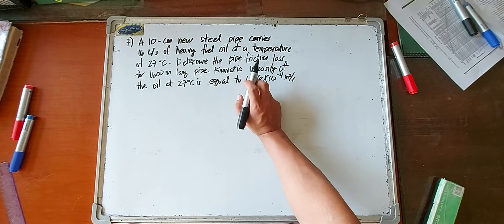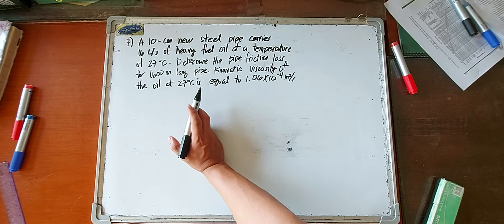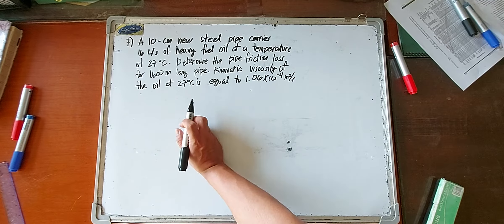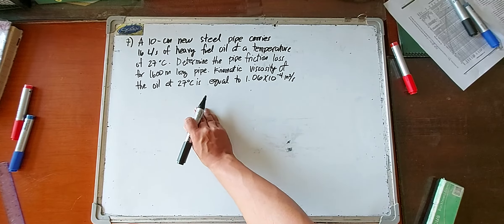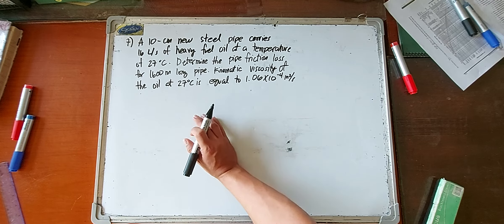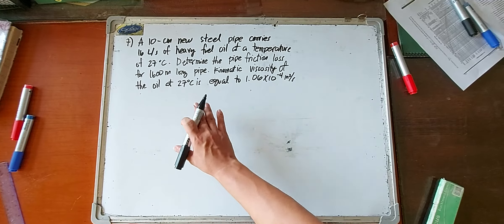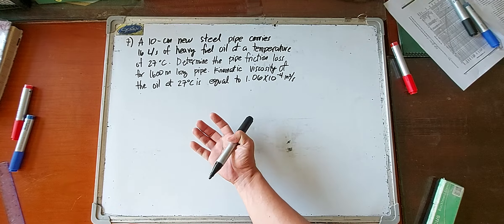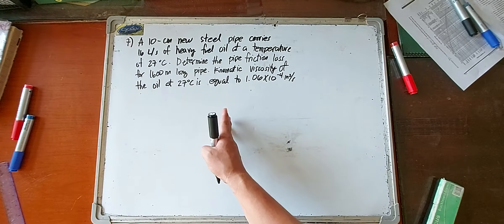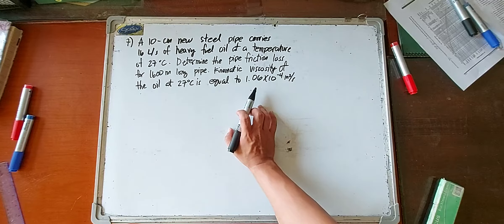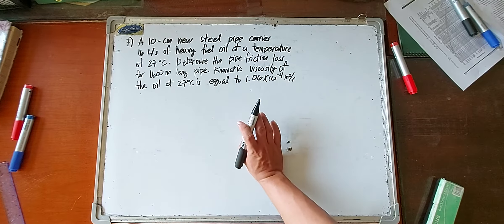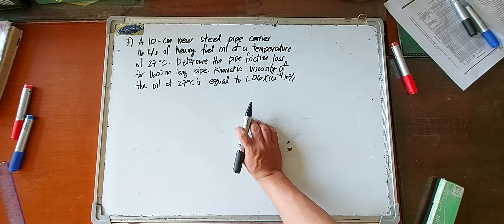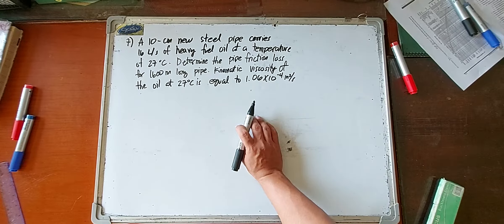So how do we solve for the friction loss of this pipe? The friction factor f or C sub 1 is not given, so we don't immediately know which formula to use. For problems like this, we often use the Darcy-Weisbach formula, because it has a provision to solve for friction loss in terms of the Reynolds number.